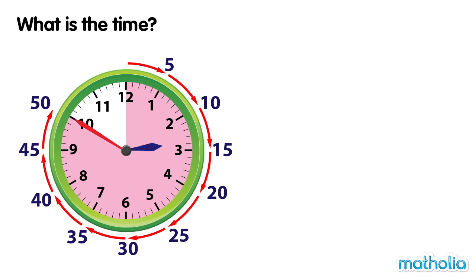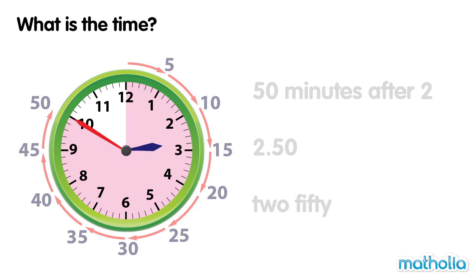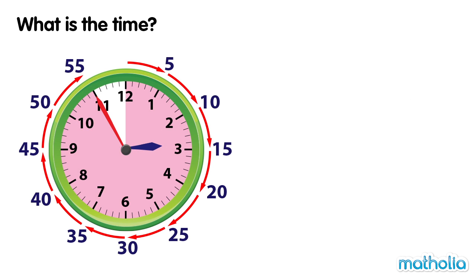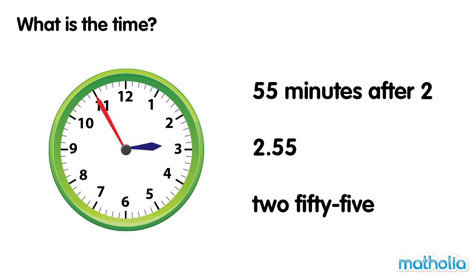Fifty minutes have passed. What's the time? Fifty minutes after two. It's 2:50. Fifty-five minutes have passed. What's the time? Fifty-five minutes after two. It's 2:55.